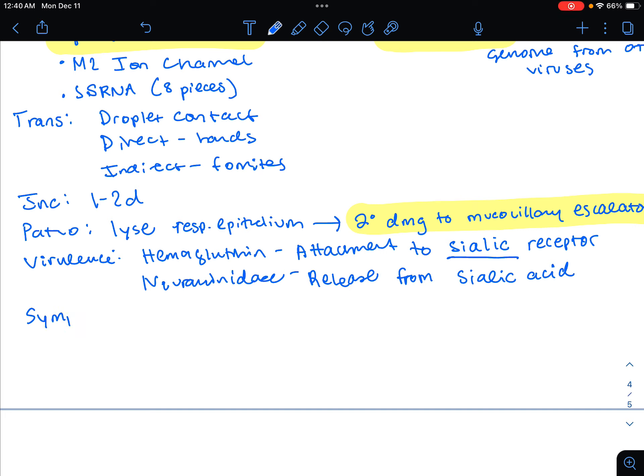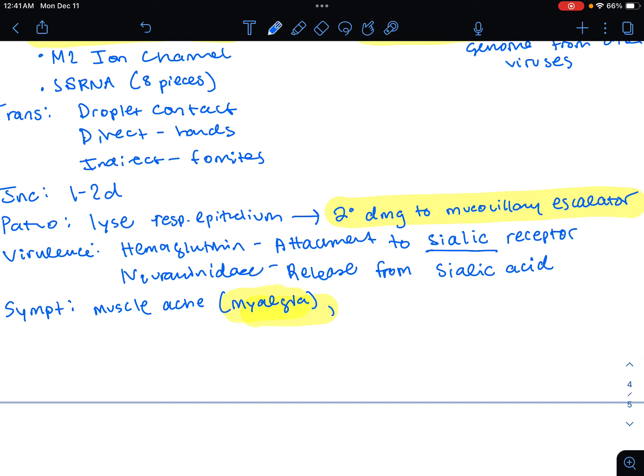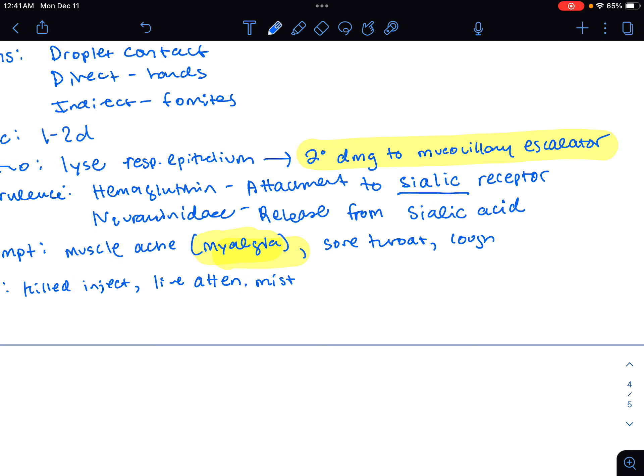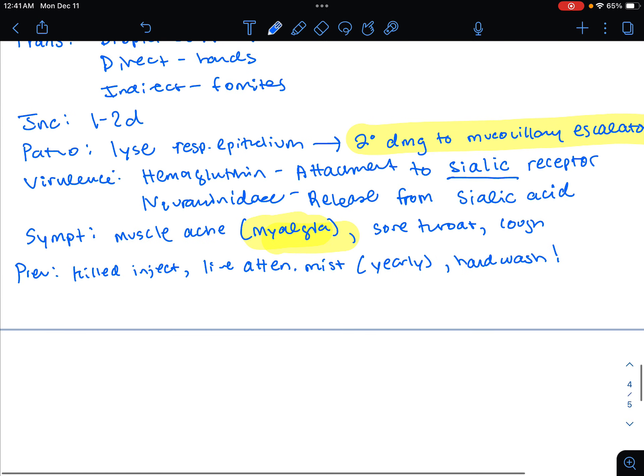Symptoms: standard fever, headache, sore throat, cough, runny nose, muscle aches known as myalgia. Prevention: we could use the killed injection or we could use live attenuated vapors or mists. That flu vaccine that's a mist, that's going to be live attenuated. We're going to have to take this yearly. We could also wash our hands.